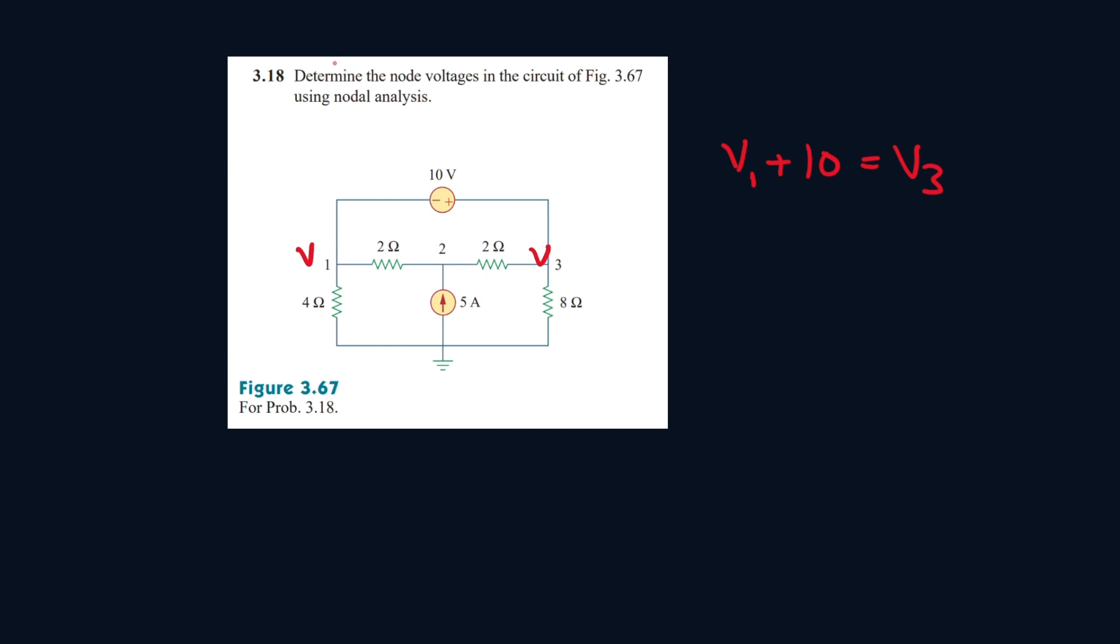Now we'll treat this as a super node. Let's write directions of current. Let's call this I1, this I2, the current passing here will be I3, this one will be I4, and this one will be I5. Now let's write the equations for these three nodes.